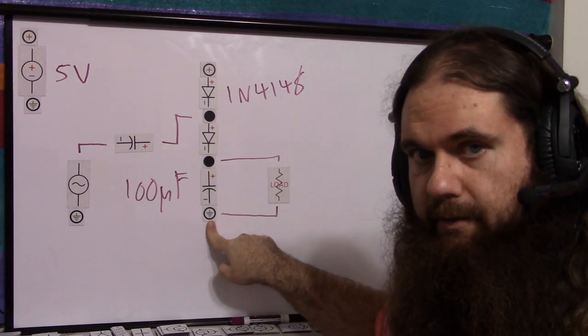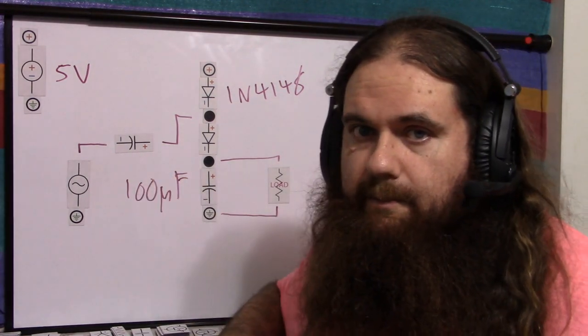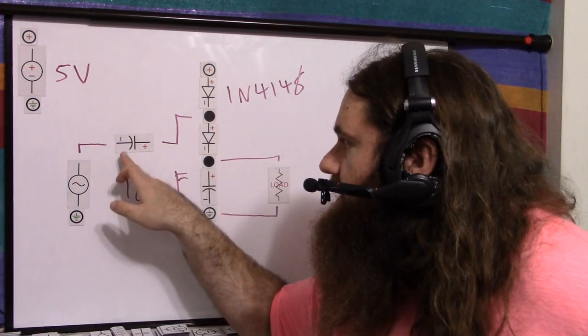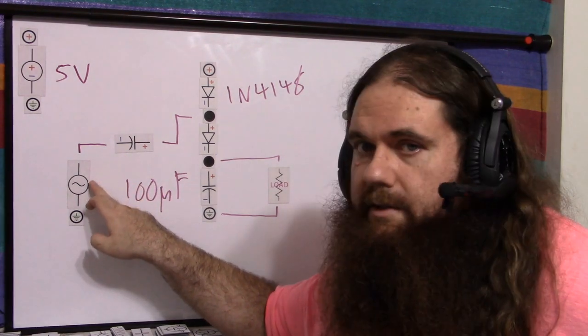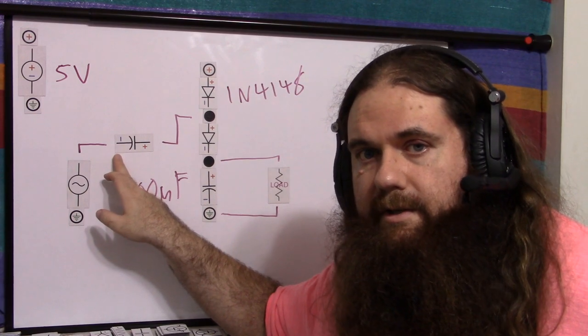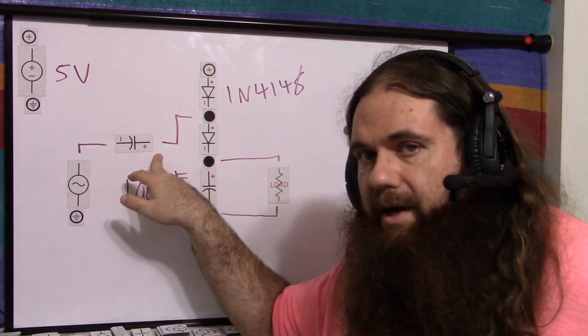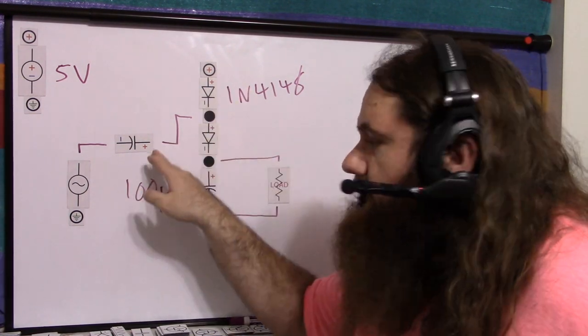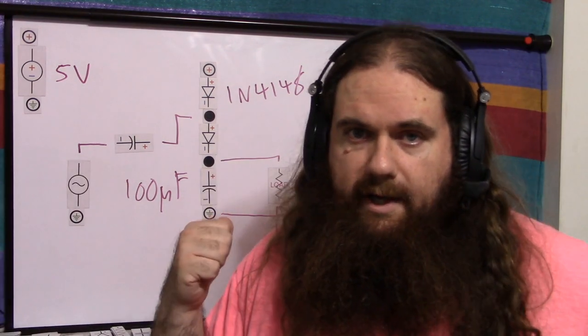This one's easy. Obviously, the negative end goes on ground, but this one's very important. I screwed this up the first time. The negative end must go on the square wave because the square wave is what's oscillating between 0 volts and 5 volts. The positive end is the one connected to the supply, and that's the end that's pushing out.